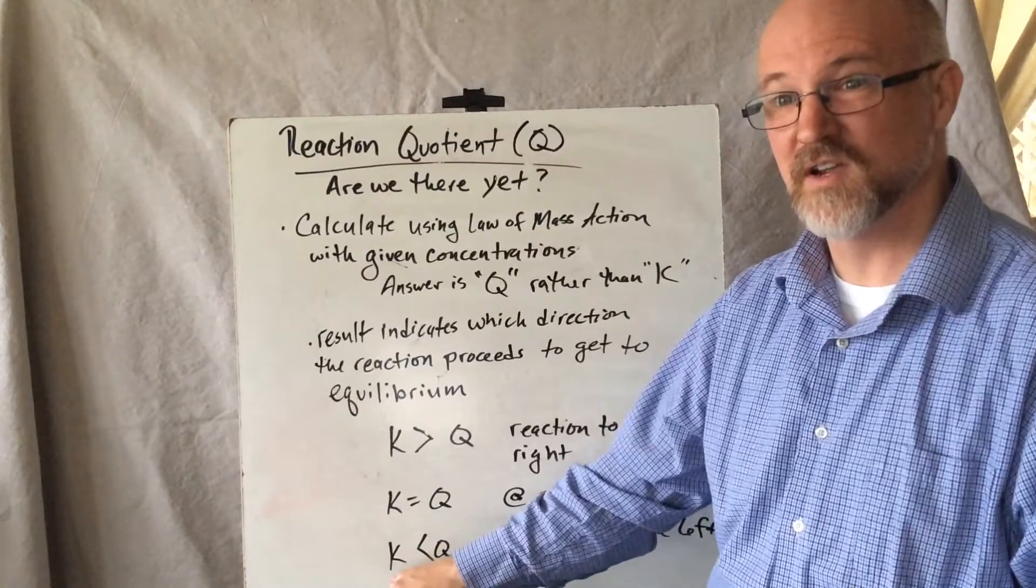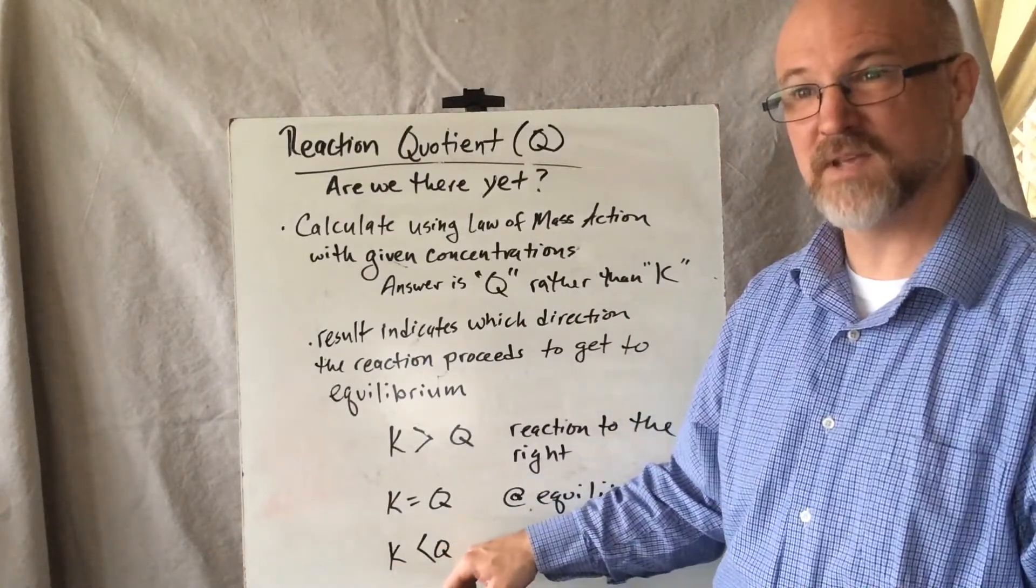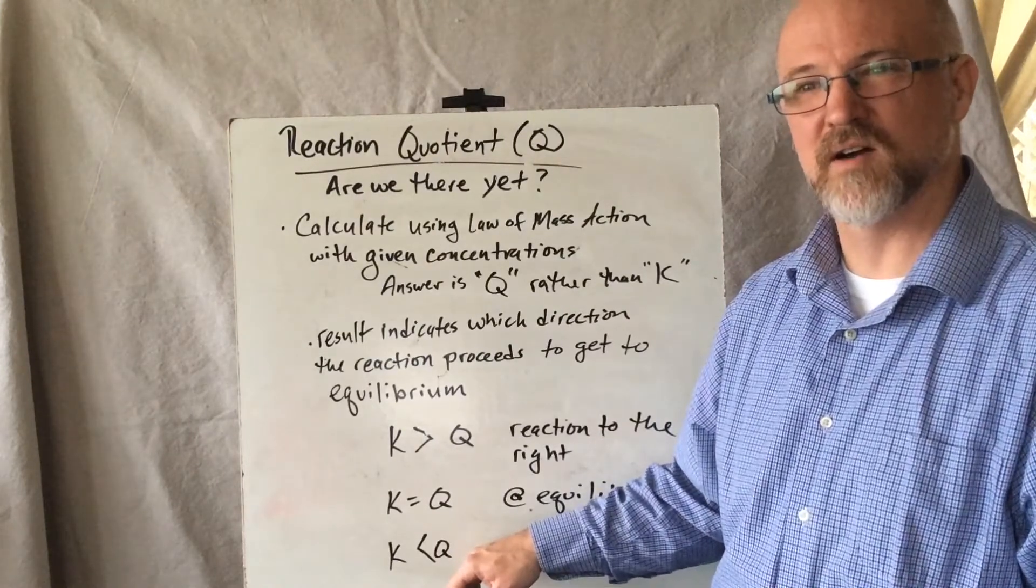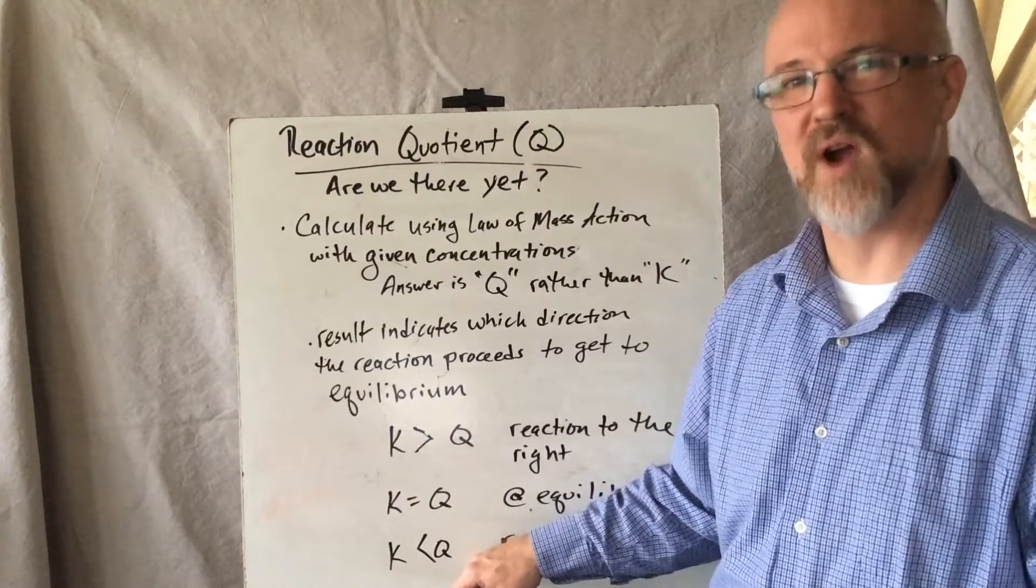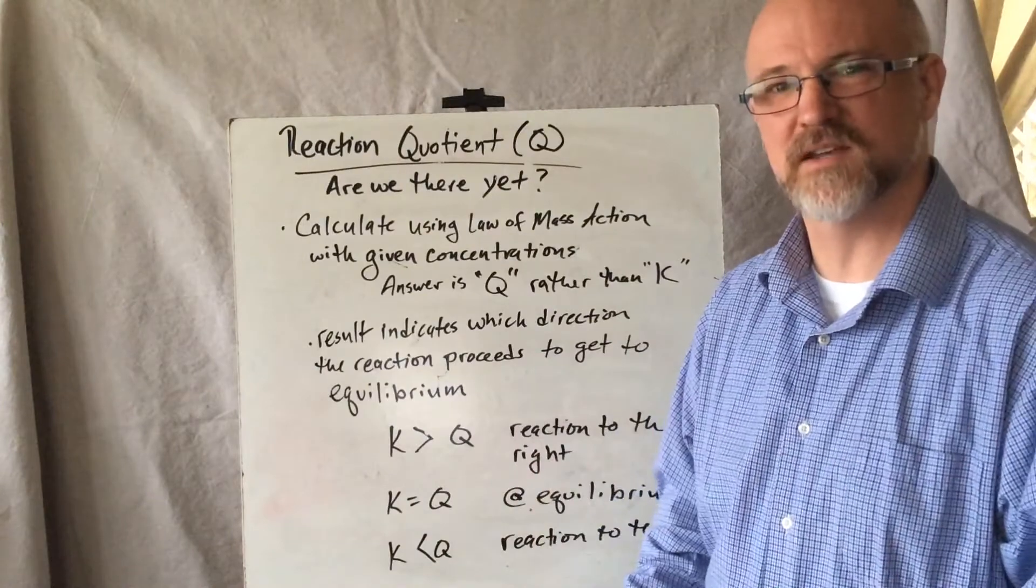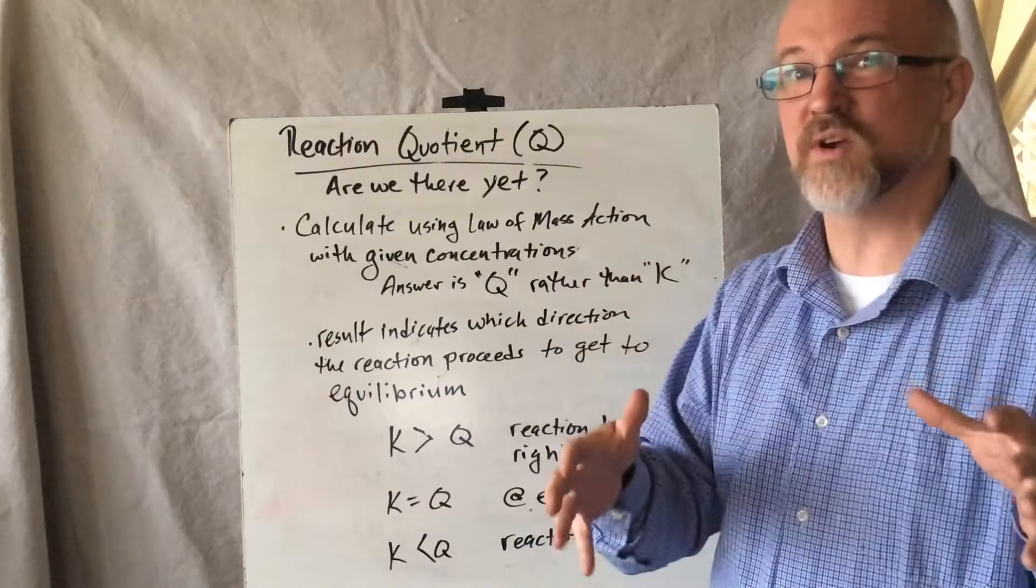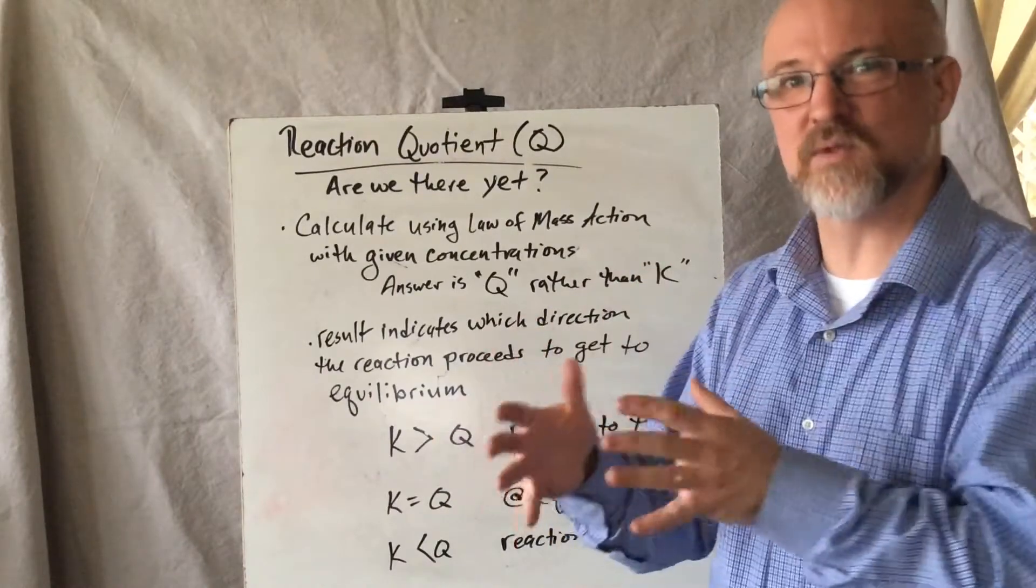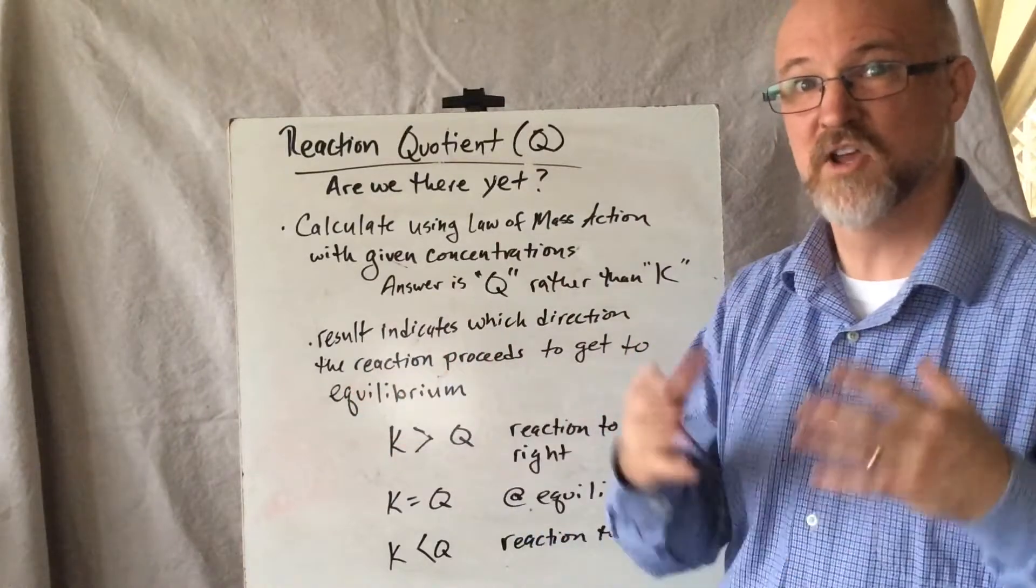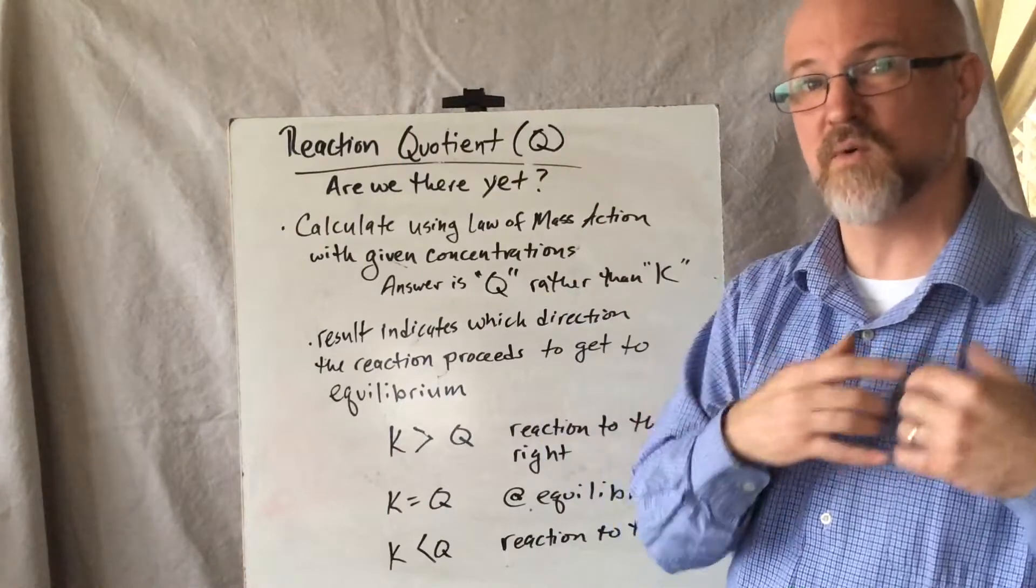If, however, K is less than Q, then that means that we have a state where there's more product than there is at equilibrium. So if there's more product in the situation we're in than there is at equilibrium, that product, more of the product is going to turn into reactants than reactants into product. So the reaction is going to shift in a reverse direction from the way it's written or to the left.